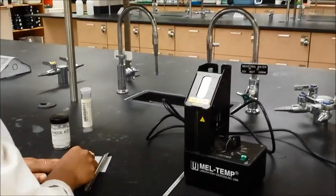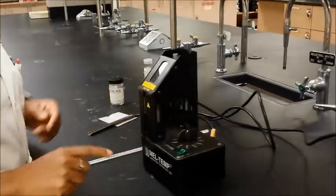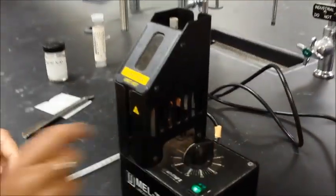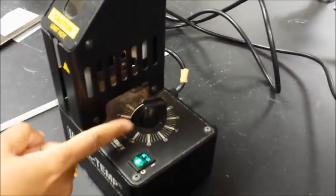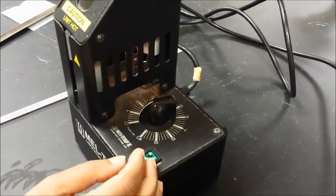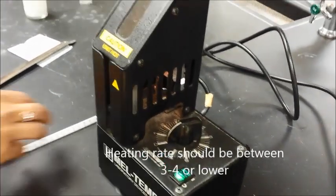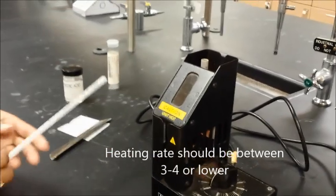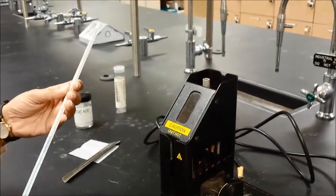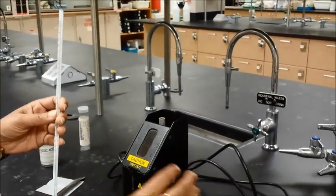Now to get your melt temp apparatus set up, what you'll have to do is plug it in of course. And this is the on button for it, this is the on switch. Right here is the heating control, so you can control the heating rate from 0 to 10. But you want to keep the heating rate to about 3 or 4. Most of the organic compounds will melt below 300, so you don't want it to be a very high heating rate. You want to actually observe the melting point, so you want to keep the heating rate to about 3 or 4.